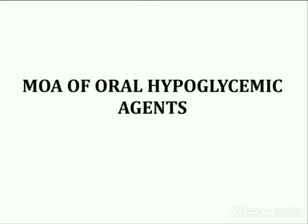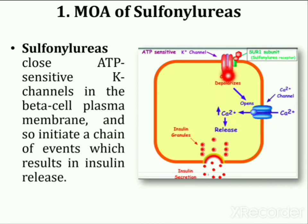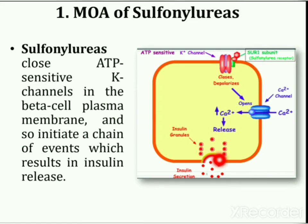Next is mode of action of oral hypoglycemic agents. First, mode of action of sulfonylureas. Sulfonylureas are widely used to treat non-insulin dependent diabetes mellitus. These drug candidates bind to and close ATP-sensitive potassium channels on the cell membrane of pancreatic beta cells, resulting in depolarization of the cell by inhibition of potassium exit. This depolarization opens voltage-gated calcium channels, and the rise in intracellular calcium leads to increased fusion of insulin granules with the cell membrane and therefore increased secretion of mature insulin.